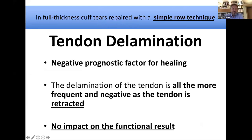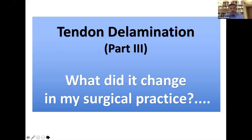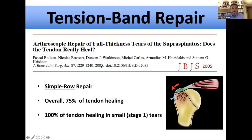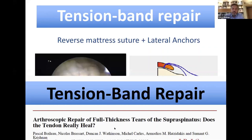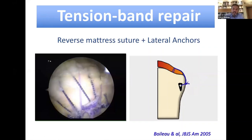What has this changed in my surgical practice? We published in 2005 — 15 years ago — the tension band repair technique. With this technique, our overall rate of tendon healing was 75%, but for small tears the rate was 100%. It is a very simple technique: place an anchor laterally, make a tension band repair, and bring everything onto the footprint — and it heals.